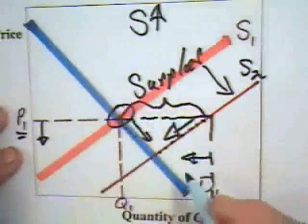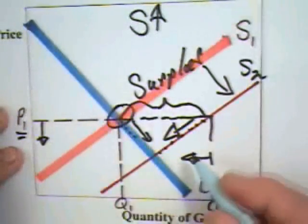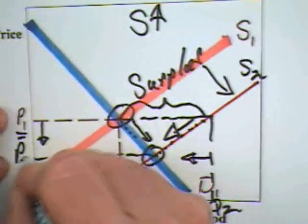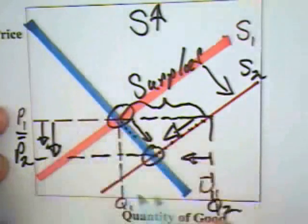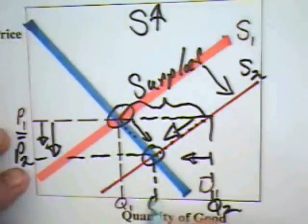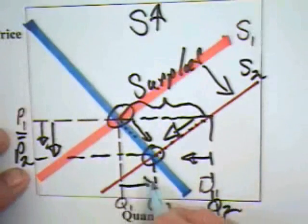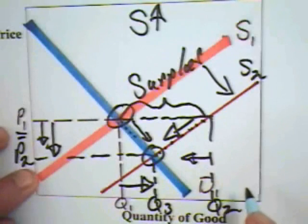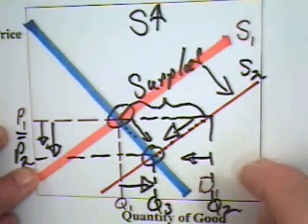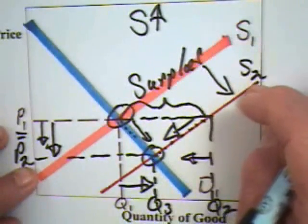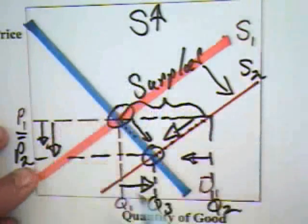The equilibrium goes from the intersection of the two thick lines to this intersection, which means that the price falls all the way to P2. The quantity sold goes to Q3. On balance, the quantity goes up. That is, equilibrium quantity bought and sold goes up. This analysis leads to the conclusion that if the supply curve increases, the price will be lower than what it otherwise would have been. The quantity sold will be higher than what it otherwise would have been.